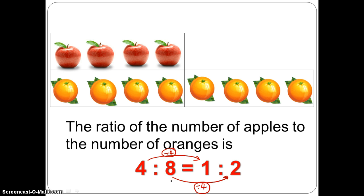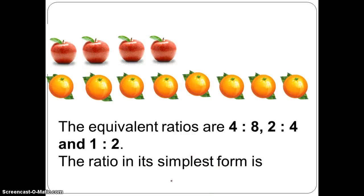Let's think about it. Can the apples and oranges be arranged or grouped in groups of 3? The answer is no because 3 is not a common factor of 4 and 8. So the equivalent ratios are 4 is to 8, 2 is to 4 and 1 is to 2. And the ratio in the simplest form is 1 is to 2. 1 is to 2 is the simplest form because we cannot divide this term any more.